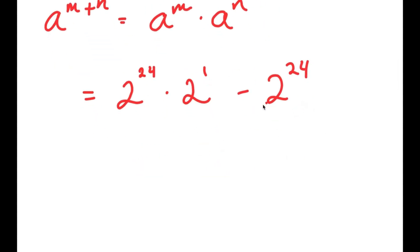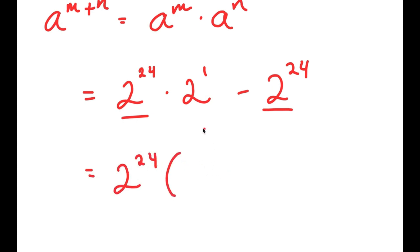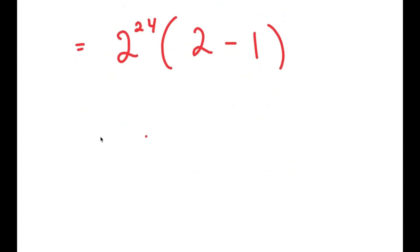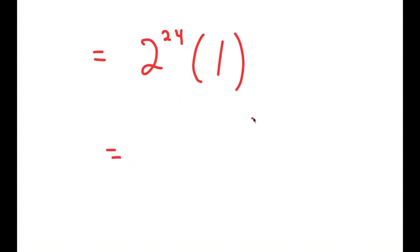From here I'm going to factor out 2 to the power of 24, because both terms have 2 to the power of 24 in them. So I get 2 to the power of 24 times 2 to the power of 1 minus 1, which is equal to 2 to the power of 24 times 1. Anything times 1 is just itself, so this equals 2 to the power of 24.